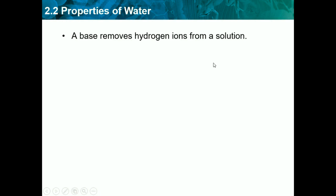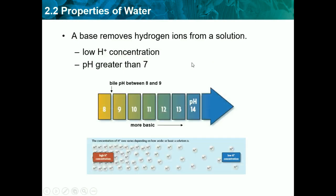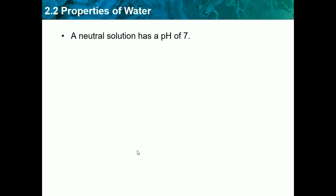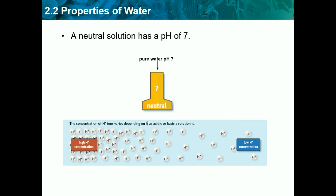Bases remove a hydrogen ion from a solution, so they have a low H+ concentration. A base has a pH greater than 7 — the closer to 14, the more basic it gets. A neutral solution has a pH of 7, and the one major neutral solution is water. Pure water has a pH of 7, but now due to pollution, most of our water is becoming more acidic, getting a higher H+ concentration.